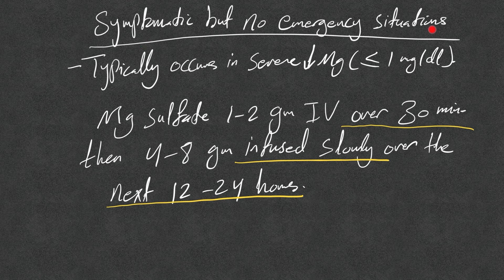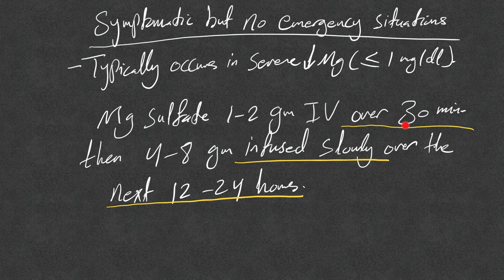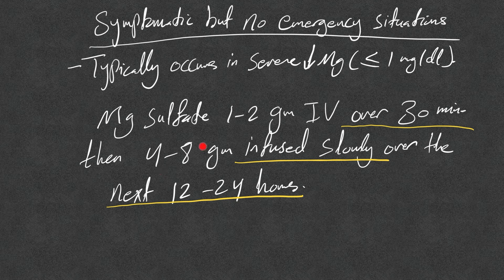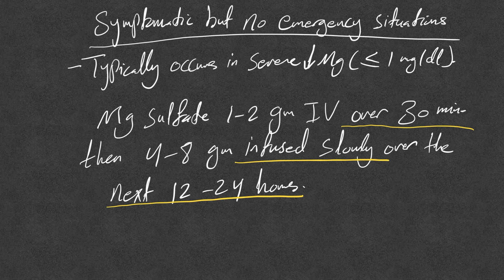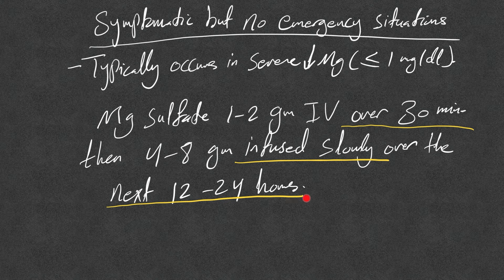If there is symptomatic but no emergency situation, and mainly this happens in severe hypomagnesemia where the level is equal or less than one, we give magnesium sulfate 1 to 2 grams IV over 30 minutes, not over 2 to 5 minutes. Then 4 to 8 grams infused slowly over the next 12 to 24 hours, and this is what most of us don't do. That will lead to a slower rise in the magnesium level and less inhibition of magnesium reabsorption, and less of this magnesium will be excreted in the urine, and more sustained magnesium supplementation.